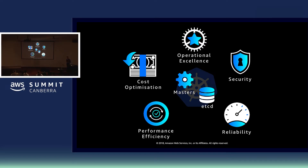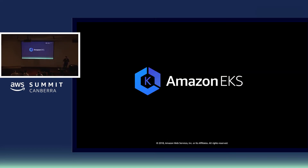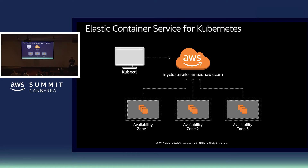We took that feedback and decided to innovate on behalf of the builders. We introduced EKS, which is a fully managed Kubernetes control plane for the open source project itself. Currently available in US East 1, US West 2, and as of recently, Dublin — and hopefully coming to Sydney in the not too distant future as well.